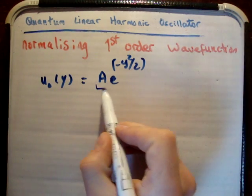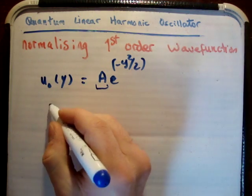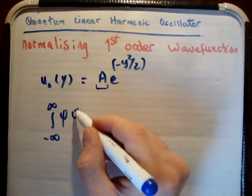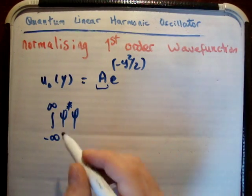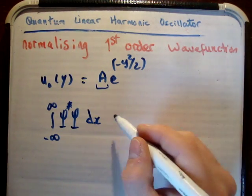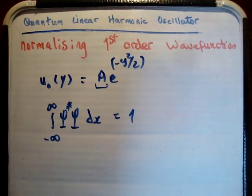So A of course is just a random constant, so we need to normalize it. What's the condition for normalization in quantum mechanics? If you integrate your wave function from negative to positive infinity, or the complex conjugate times your wave function, in one dimension dx, it must be equal to 1. And that physically means that your particle must exist somewhere in space.